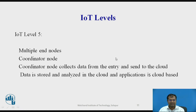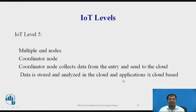Next comes IoT level 5. Here, multiple end nodes are there and there will be one coordinator node. The coordinator node collects the data from the end nodes and sends it to the cloud. The data will be stored in the cloud, further analysis will be done, and the application will be supported.